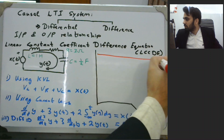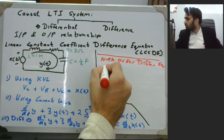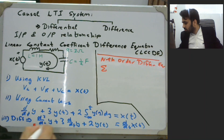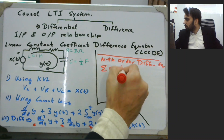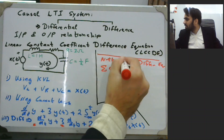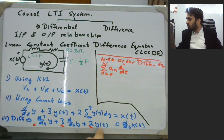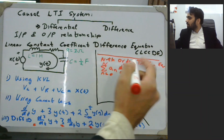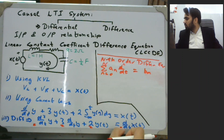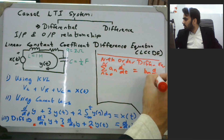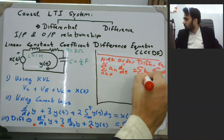Assuming an nth order differential equation, we can express it as a summation with constant coefficients aₙ linked to the nth derivative of the output d^n/dt^n y(t), where the summation runs from 0 to N. Similarly, for the input side we have coefficients bₘ linked to the mth derivative of input x(t), with the summation from 0 to M.